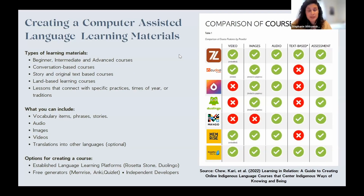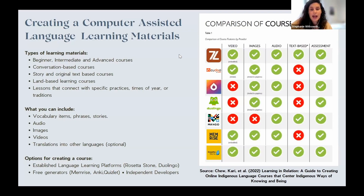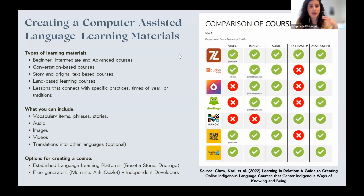There are established language learning platforms with ready-made packages, such as Rosetta Stone and Duolingo — essentially where we fall. There are also free generators like Memorize, Anki, or Quizlet, where you plug in your data and they generate flashcards or games. There's also the option of hiring independent developers to create a course to your exact specifications, though that tends to be more expensive and requires careful planning to ensure technology support continues into the future after you stop working with that developer.